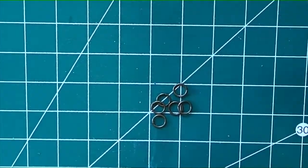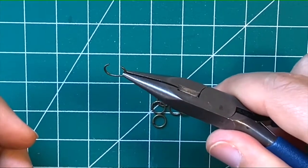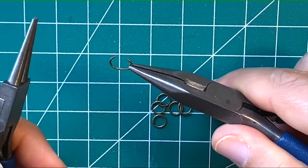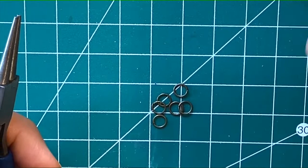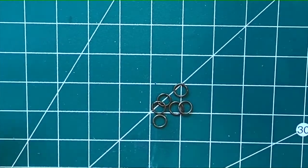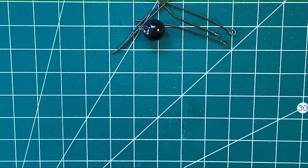You should never try to pull a jump ring apart like this one's been done. This will never close properly and you will always have a gap, which will ruin your jewelry. Just remember that nice simple twist.